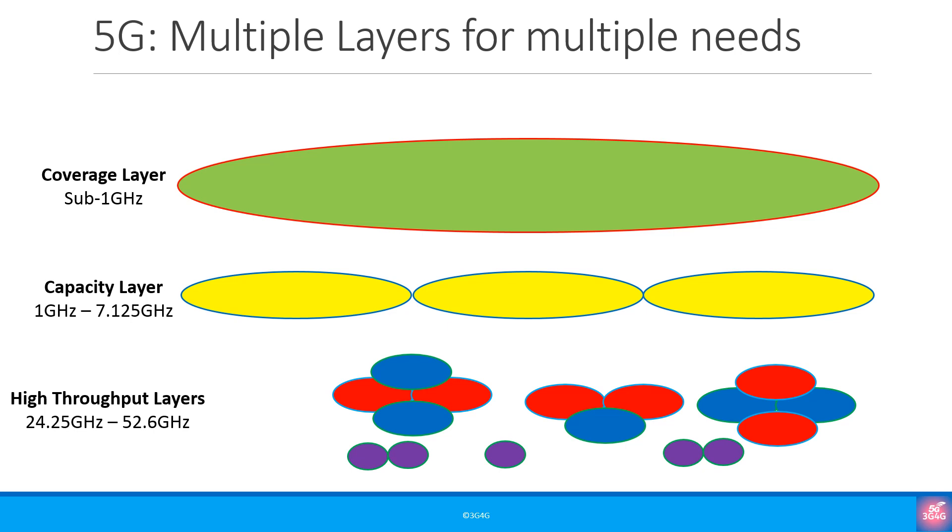3GPP defines these frequencies as frequency range 2 or FR2. These are also referred to as millimeter wave frequencies or mmWave frequencies.